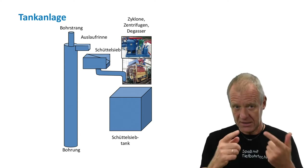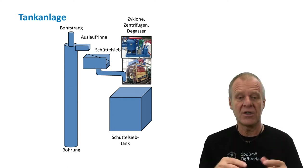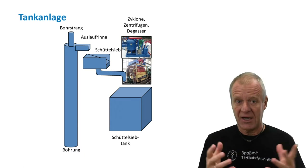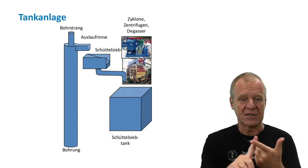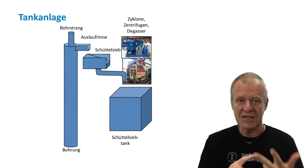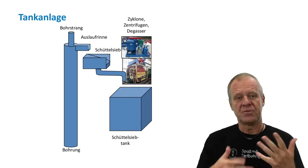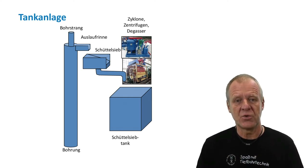For this purpose, the mud engineer can use different devices to remove contaminants, such as cyclones, a centrifuge, or a degasser — all of these to remove the contaminants from the mud.